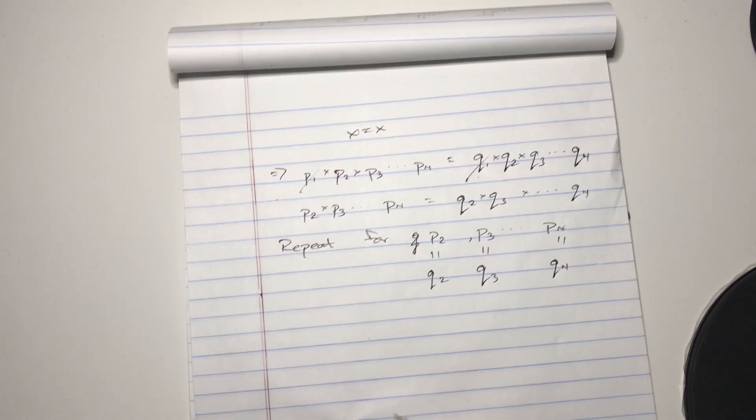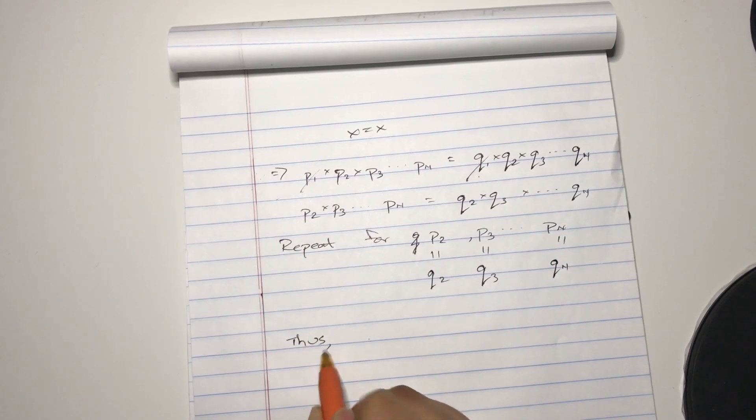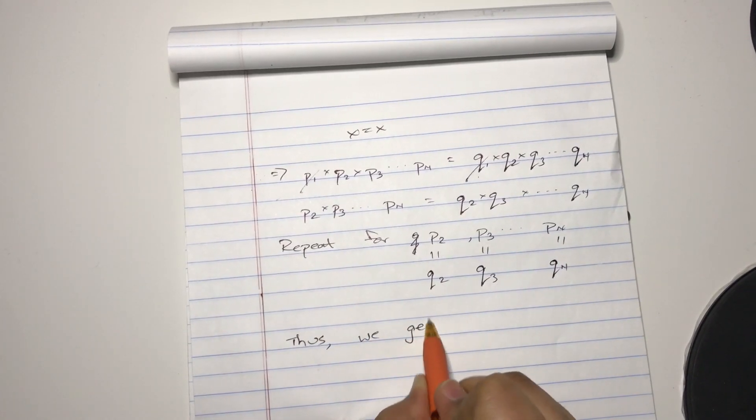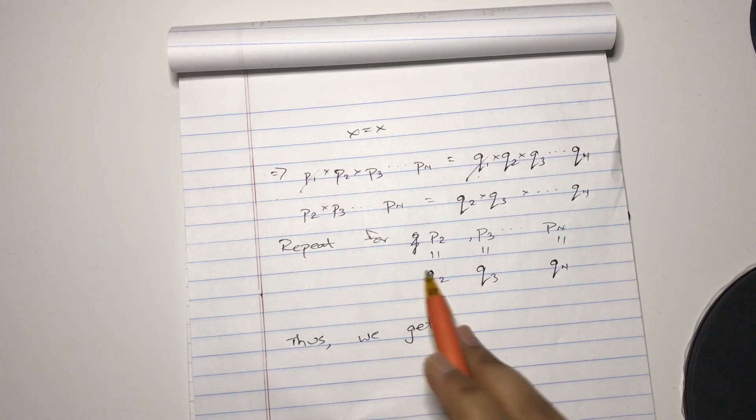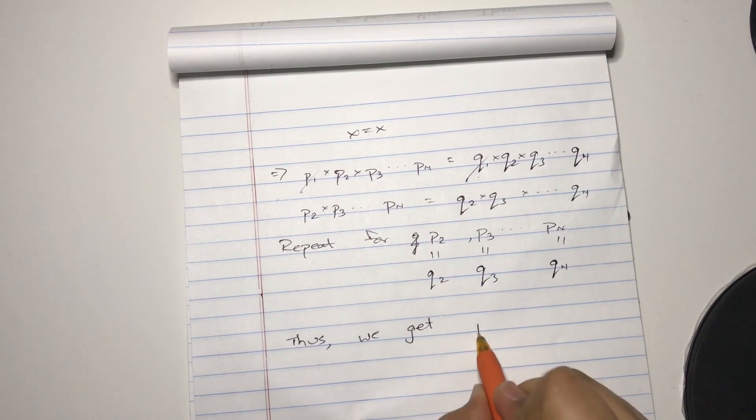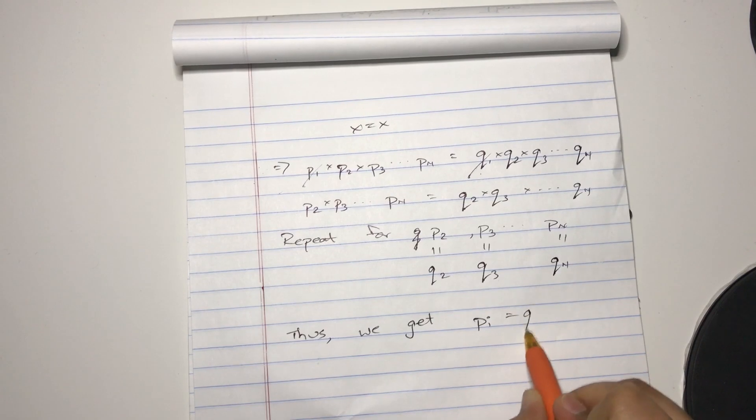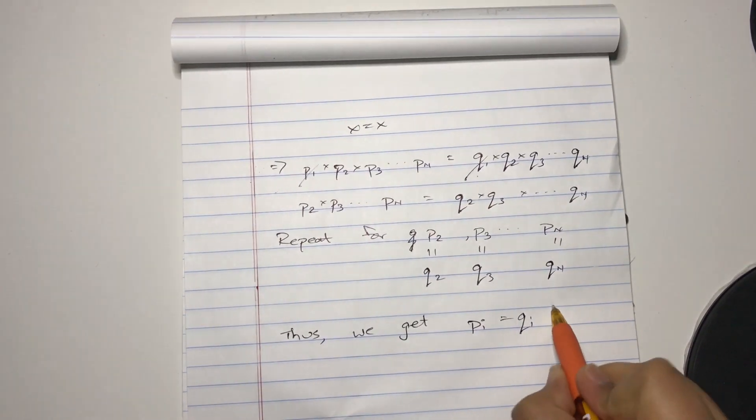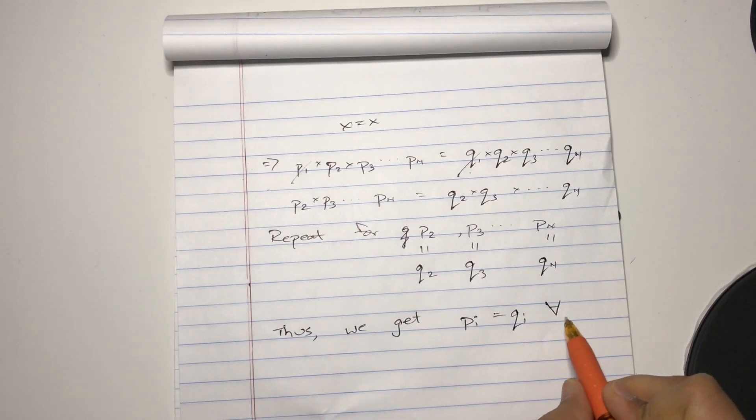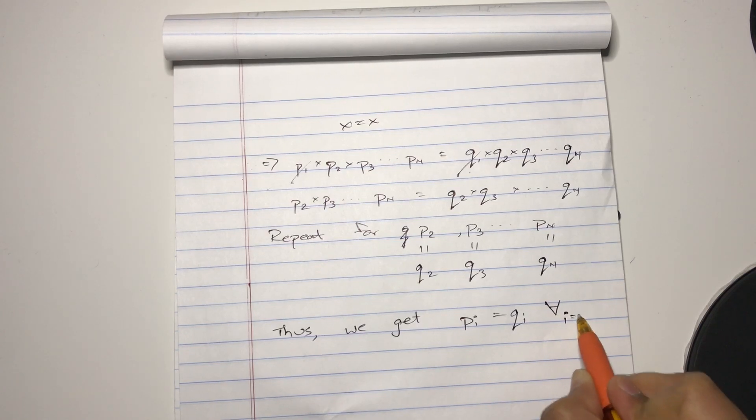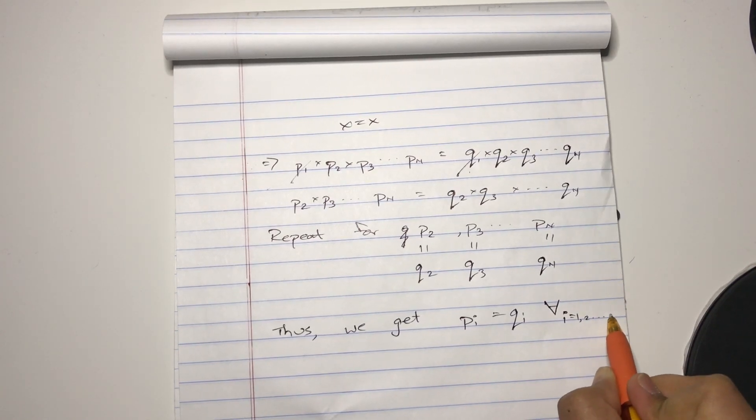Okay, then thus, we get all of them get canceled. We get pi for any i between 1 and n equals qi for every, for all i equals 1, 2, all the way to n.